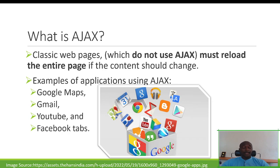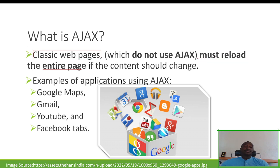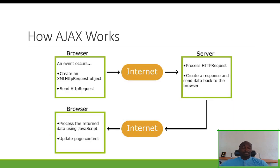Sites that never used AJAX are called classic web pages. What we've built so far in our practicals are classic web pages — we have to reload the entire page for the content to change. With AJAX we won't need to do that. Examples of applications utilizing AJAX include all Google applications, Facebook applications, and the list is very long. Generally, most modern web applications are using AJAX.